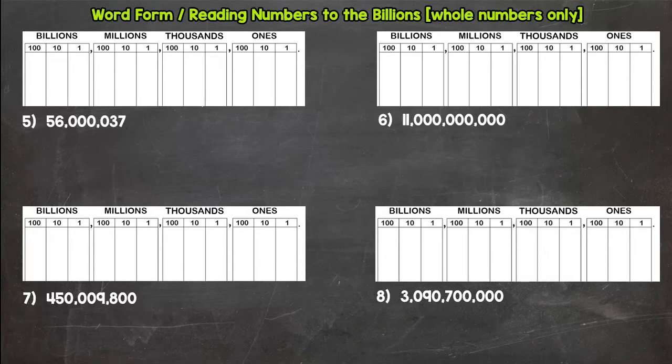So we have 56 in the millions period, we do not have any thousands, and 37 ones. So remember, first name, last name: 56 million, nothing, 37. Don't write 'nothing' there, just say nothing. So 56 million, 37—there's our word form. Let's write it out.